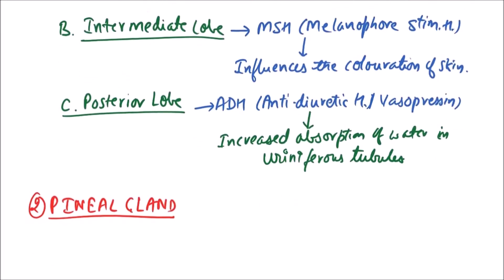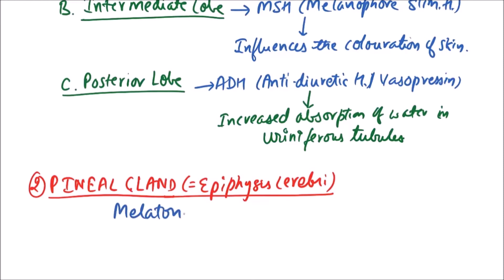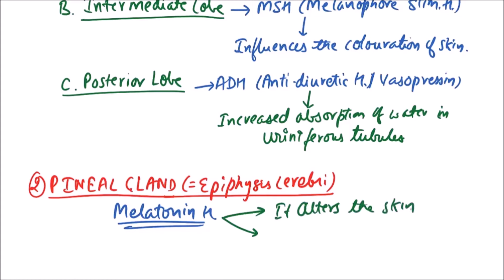The next gland is the pineal gland, which is also single like the pituitary gland and is termed epiphysis cerebri. It is part of the diencephalon of the brain. The hormone released by the pineal gland is melatonin, which alters skin color and inhibits the functions of the gonads.